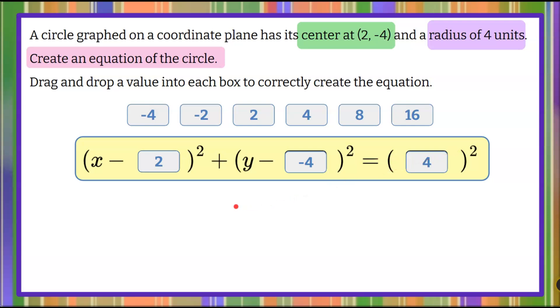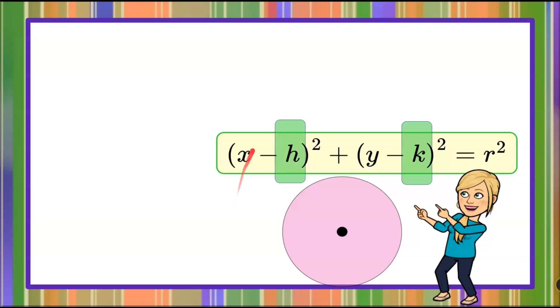There you have it. That is the equation of a circle when you're given the center of the circle as an ordered pair and the length of the radius.